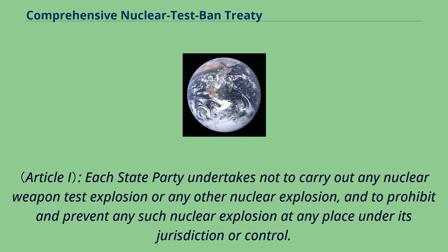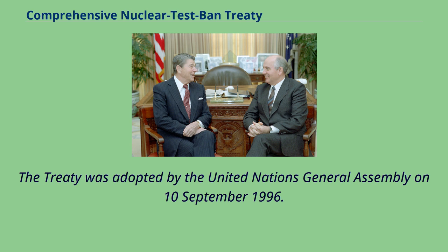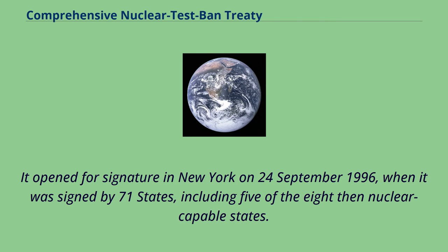Each state party undertakes not to carry out any nuclear weapon test explosion or any other nuclear explosion, and to prohibit and prevent any such nuclear explosion at any place under its jurisdiction or control. Each state party undertakes, furthermore, to refrain from causing, encouraging, or in any way participating in the carrying out of any nuclear weapon test explosion or any other nuclear explosion. The treaty opened for signature at New York on September 24, 1996, when it was signed by 71 states, including five of the eight then-nuclear-capable states.